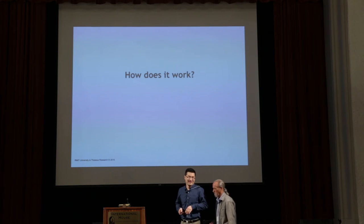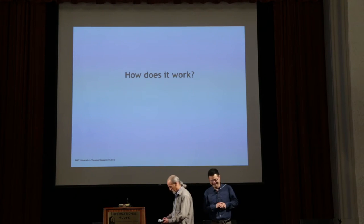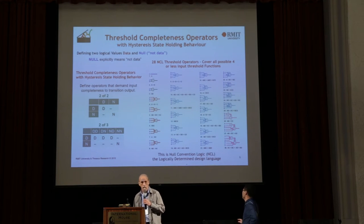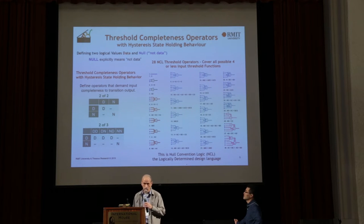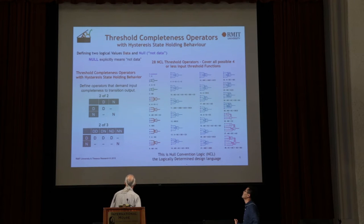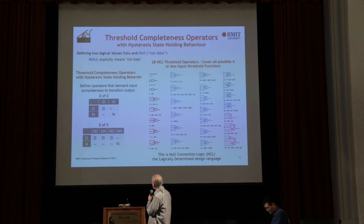How does it work? My support Karl will explain. It's a different kind of logic. We begin by defining two logical values: data and null. Null explicitly means not data. We assign these values to the two electronic values, high and low — typically data is high and null is low. Then we define threshold operators on these values that demand completeness of input and have hysteresis state-holding behavior.